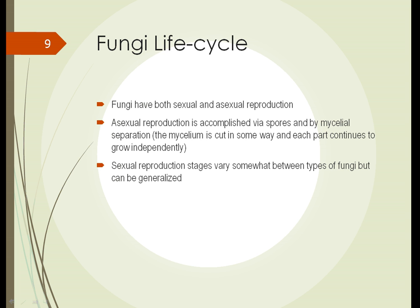Fungi have both sexual and asexual reproduction — they're like plants in that regard. Asexual reproduction is accomplished via spores or by mycelial separation, in which the mycelium is cut in some way and each part grows independently. Imagine a decaying tree with fungi invading the wood structure — if the tree breaks in half, the mycelia in each part can continue to grow independently.